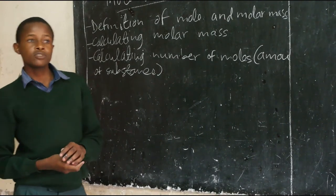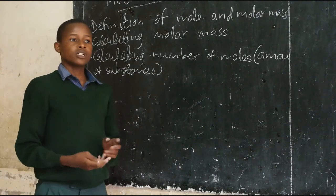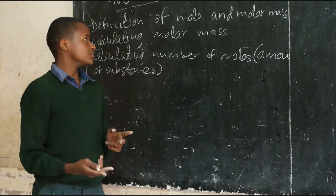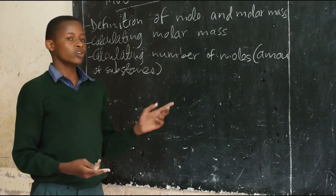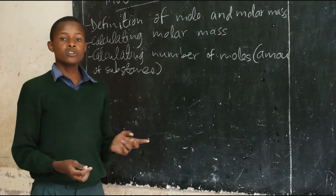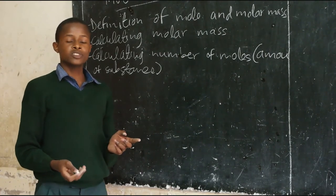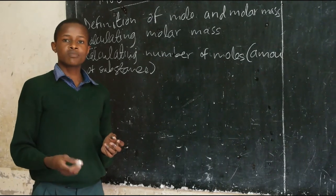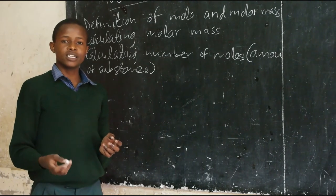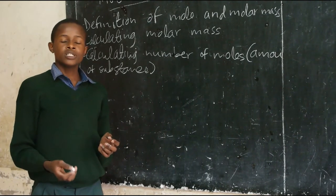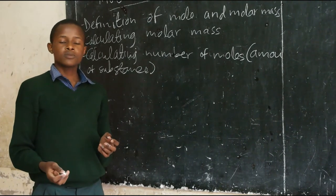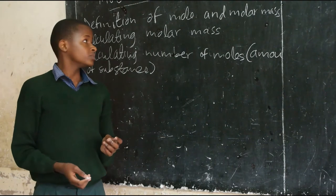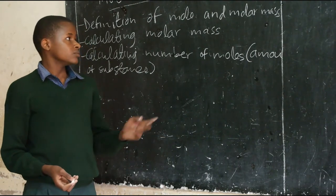First of all, I am going to start with the definition of mole. Mole is the amount of substance that contains as many elemental particles as there are atoms in 12 grams of carbon-12 isotope.